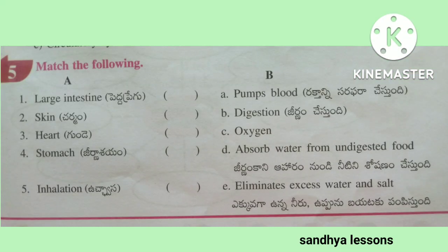Fifth, match the following: Large intestine — absorb water from undigested food. Skin — eliminates excess water and salt. Heart — pumps blood. Stomach — digestion. Inhalation — oxygen.